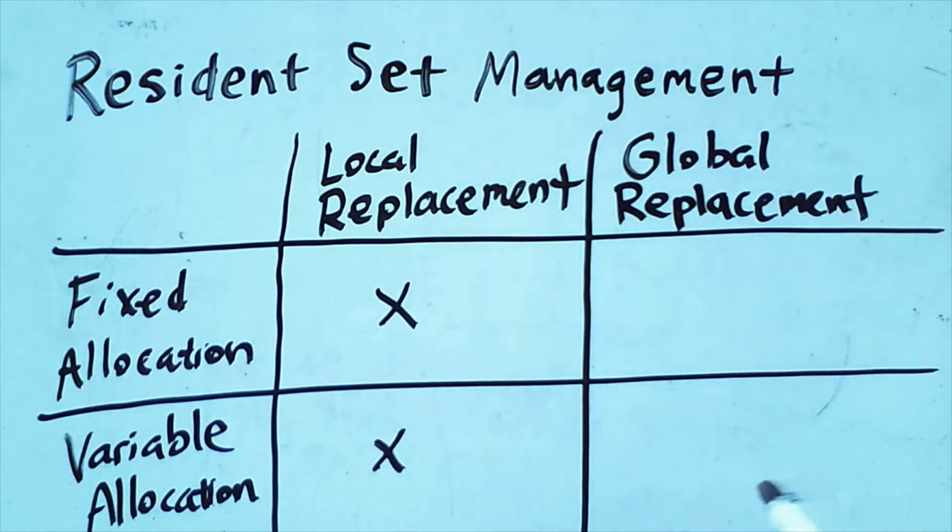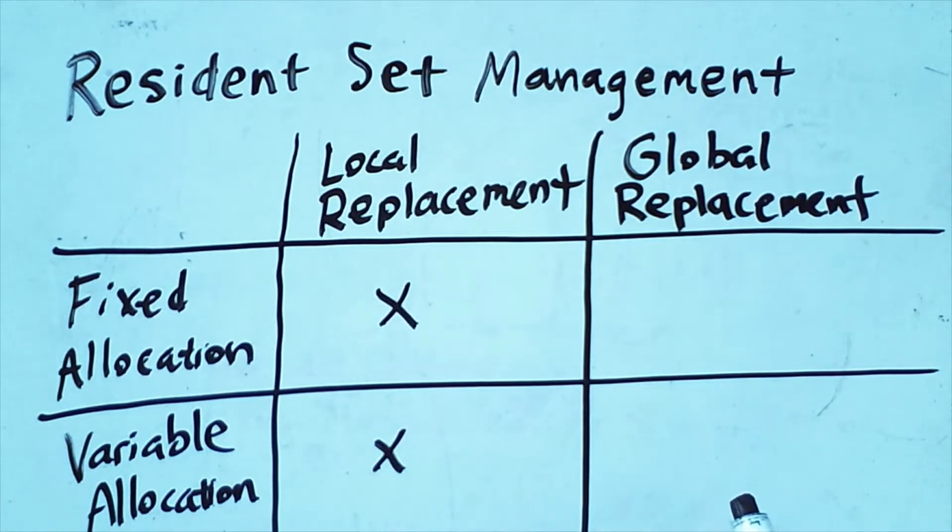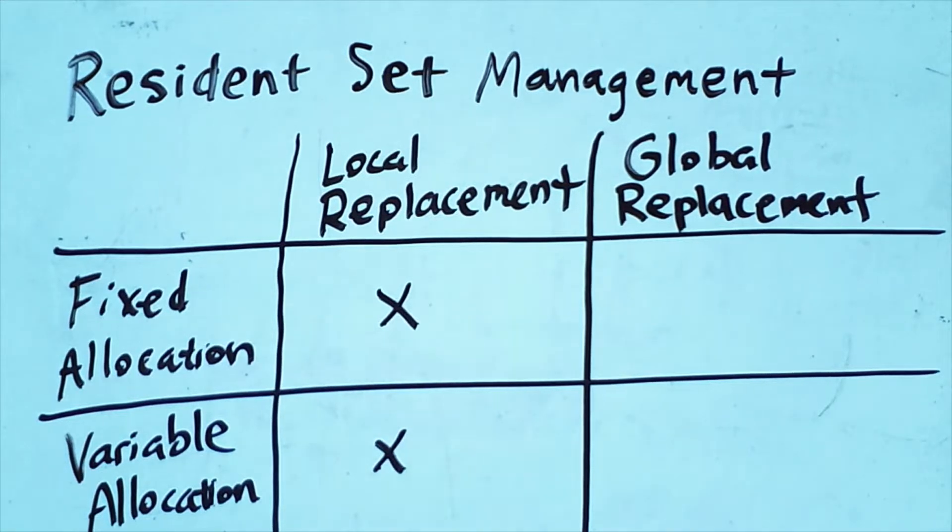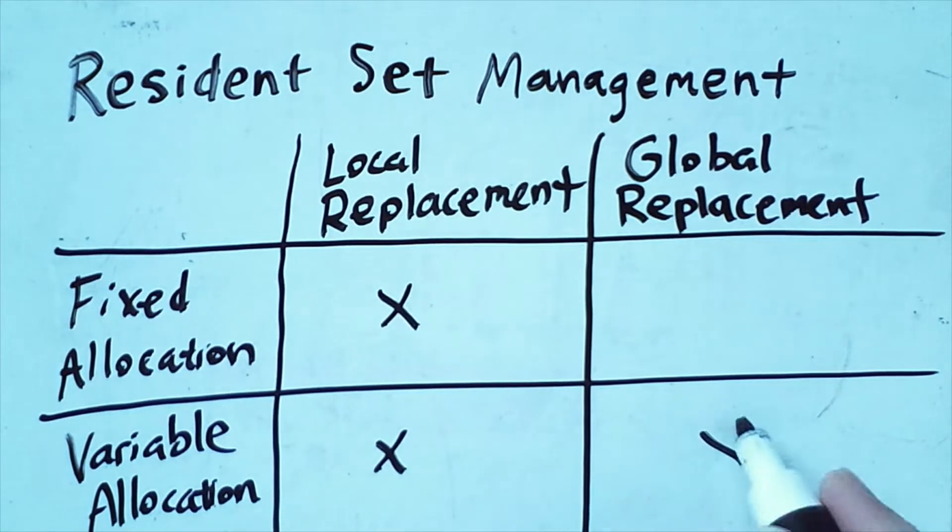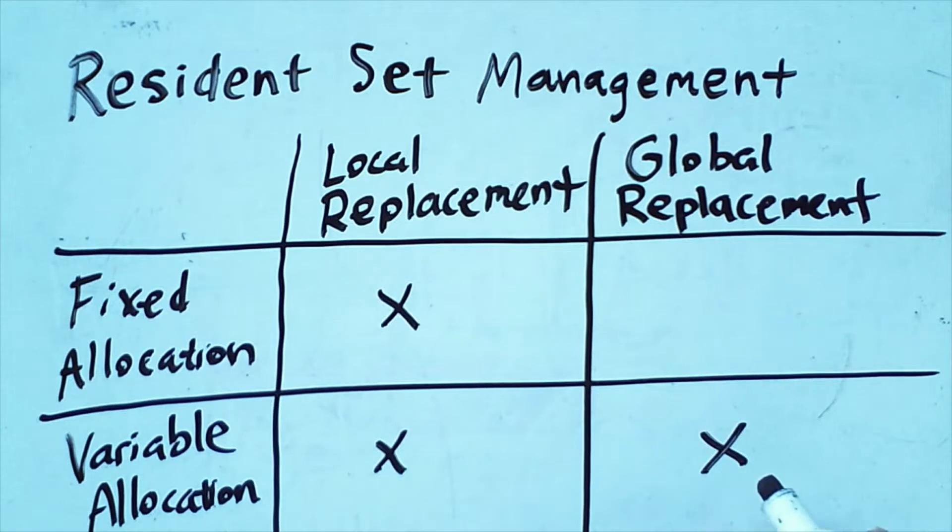In this scheme, any frame can belong to any process, and whenever we want to replace one, we simply look at the entire set of frames in memory and use any one we want to store the new page being brought in from virtual memory.